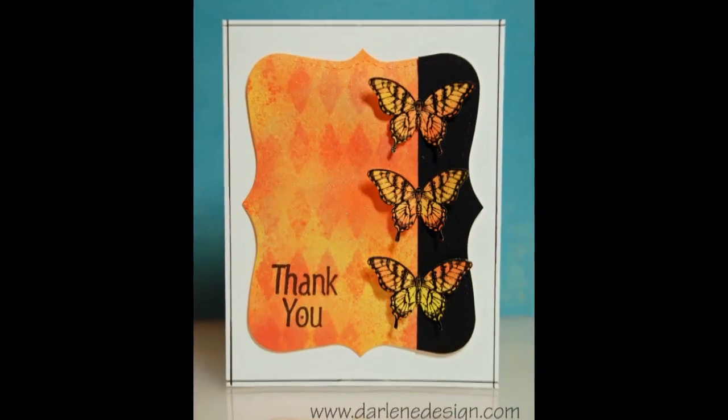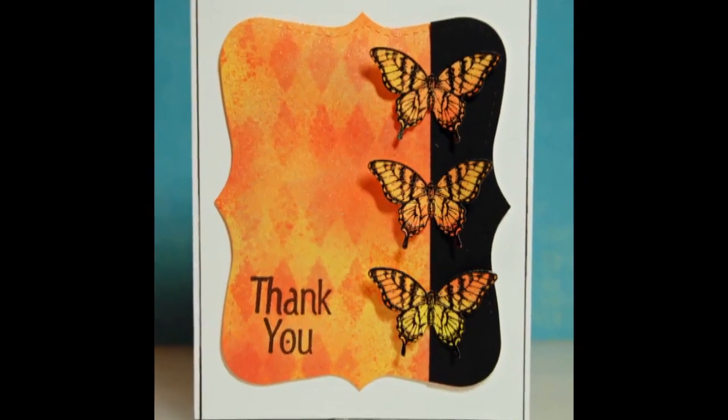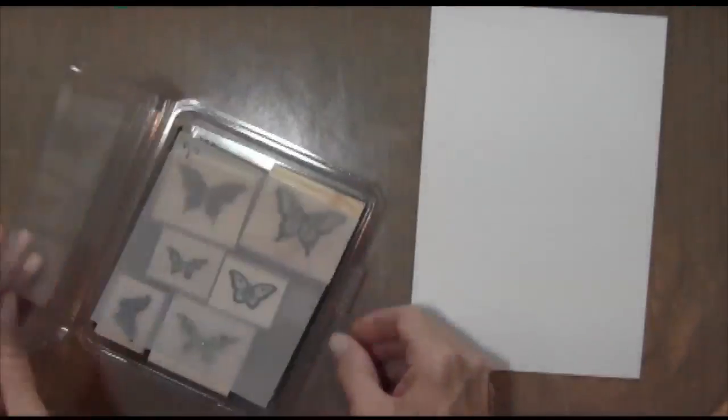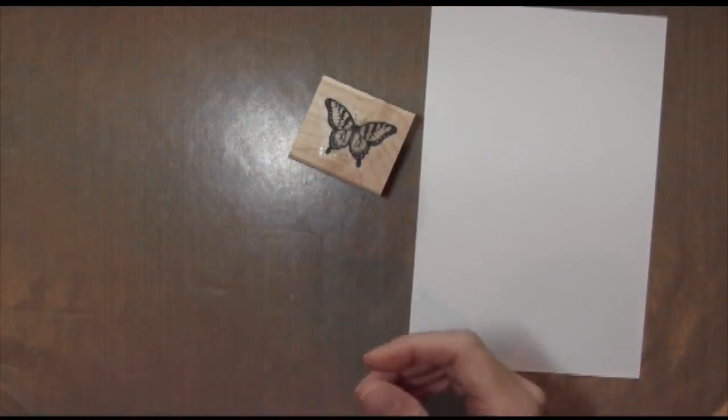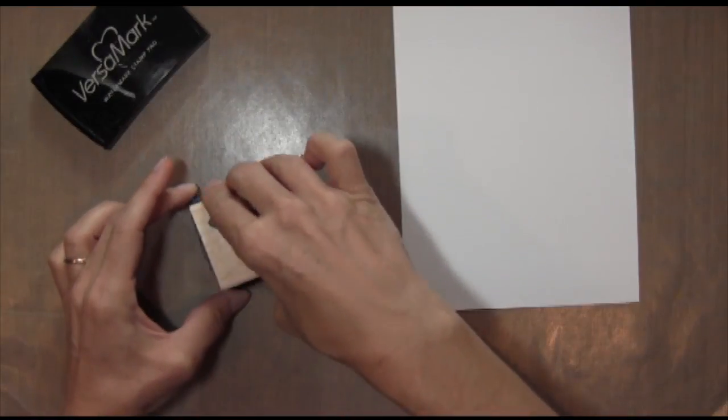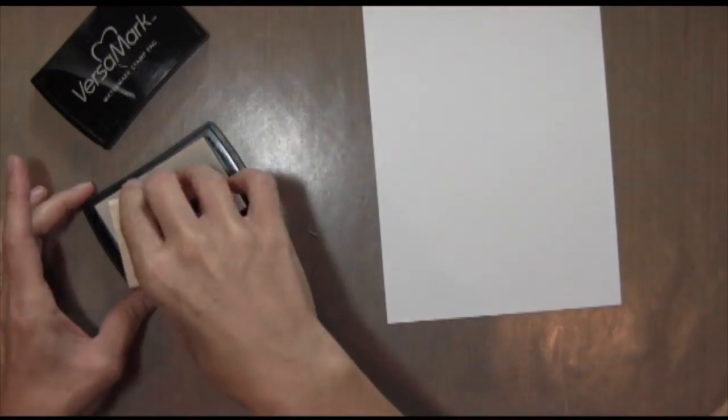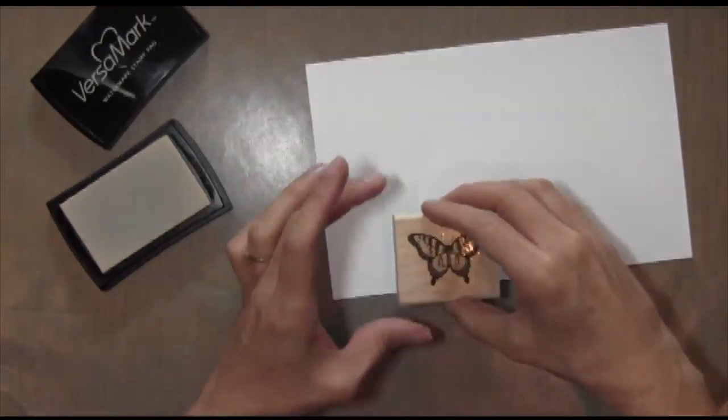Hi everyone, it's Darlene. Welcome to this week's card video. I used a new product for me today called Fireworks, a Sprite ink. The first thing I'm going to do is take my Papillon Potpourri from Stampin' Up, which is this butterfly stamp. It's a whole set of butterflies, really pretty.